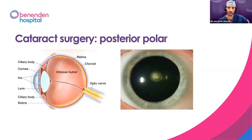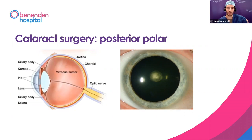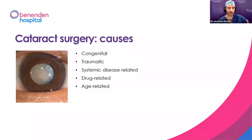A less common one is called a posterior polar cataract — it's just at the back pole of the lens. The lens is almost a bit like a sphere, so you can have anterior and posterior poles. These are quite unusual and of some interest, but at the end of the day when you take all of these cataracts out they go through a tube and into the bin. People have asked if they can keep theirs, but unfortunately the surgery mashes it up during removal.